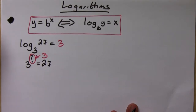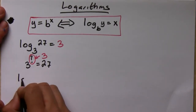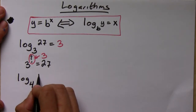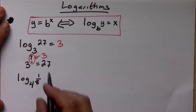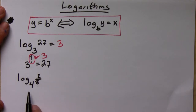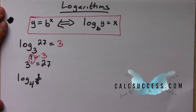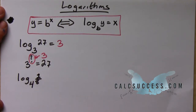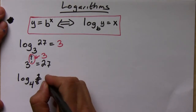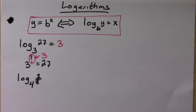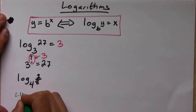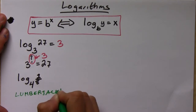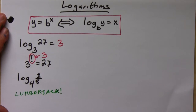Now let's say you want to find log base 4 of 1/8. This one's a little trickier because 4 to what power equals 1/8 isn't a whole number. What you can do is call on what I like to call the 'lumberjack,' which is just a way of remembering the definition.